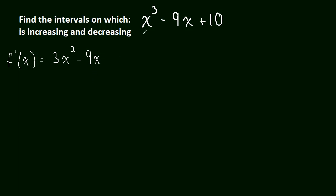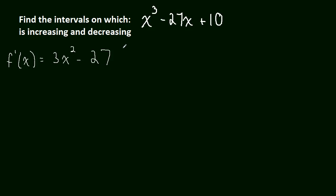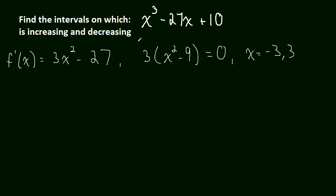To find the critical numbers, we factor out a 3 and we're left with x squared minus 9, set equal to zero. Of course our critical numbers are x equals negative 3 and x equals 3. Hopefully that part is second nature by now.